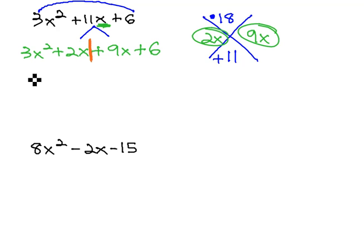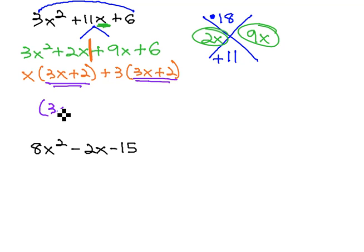Grouping splits down the middle, and on the left side, the GCF is x, leaving behind 3x plus 2, and on the right side, the GCF is 3, positive 3, leaving behind 3x plus 2. We have matching binomial factors of 3x plus 2, and the remaining factor is just x plus 3.